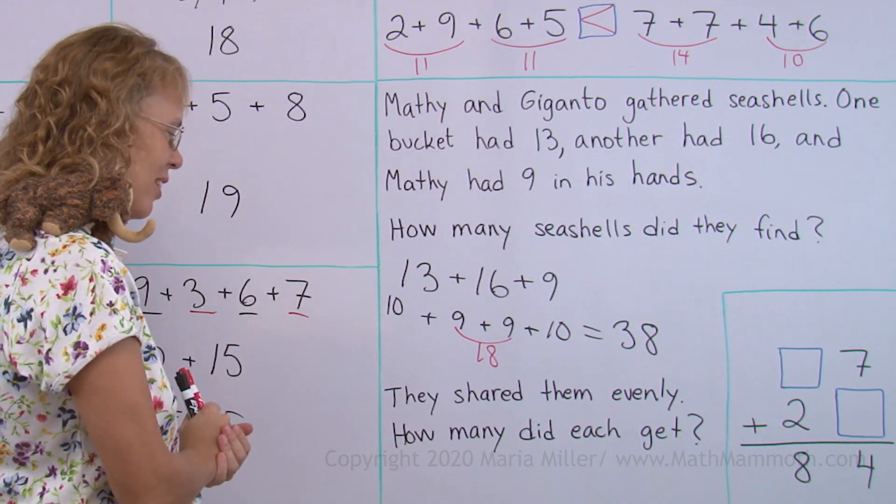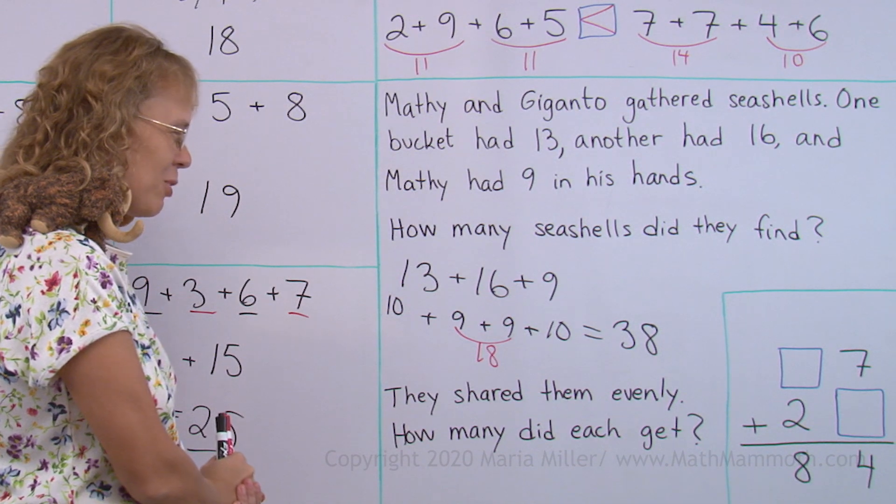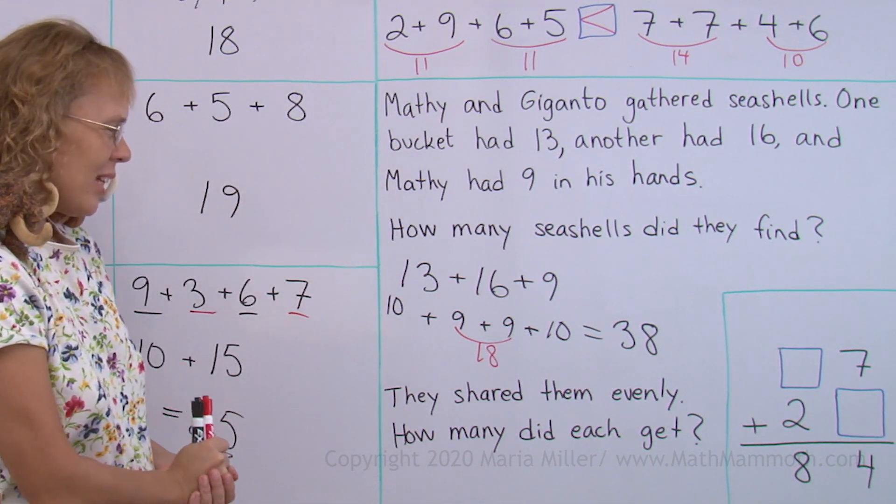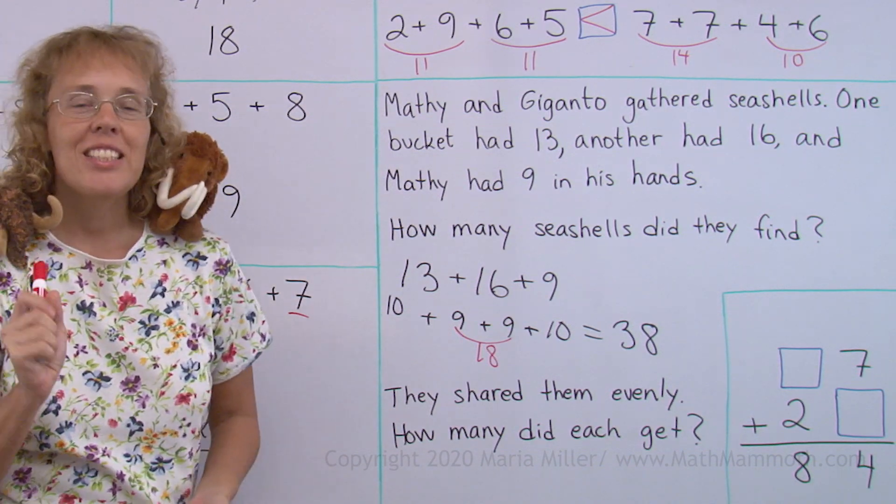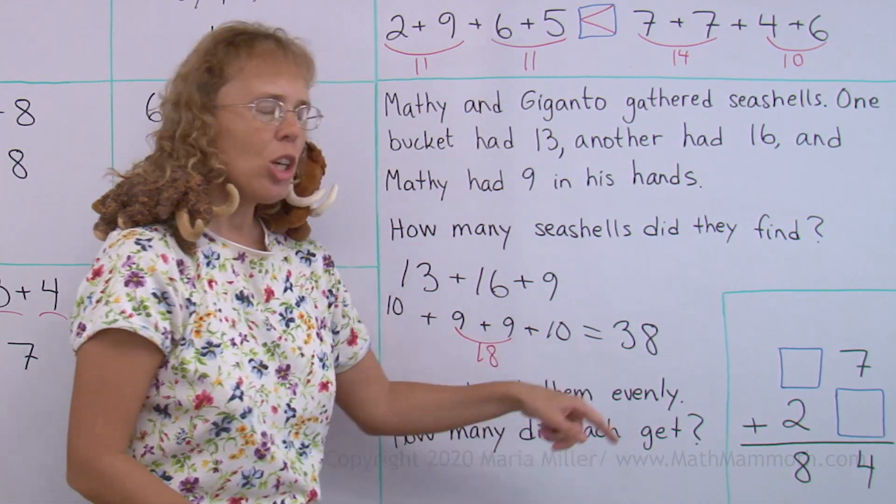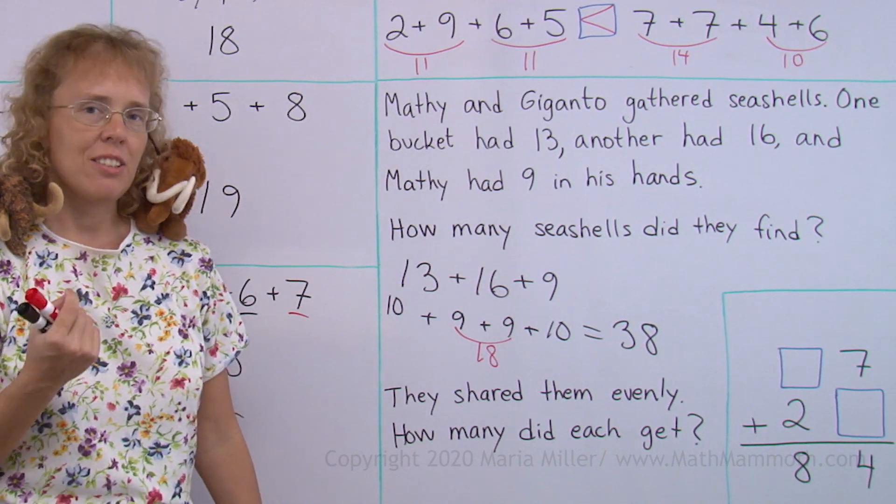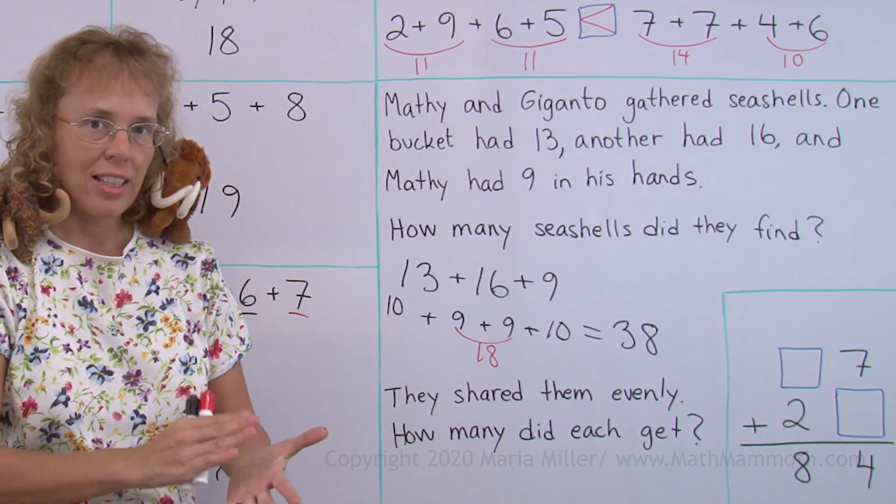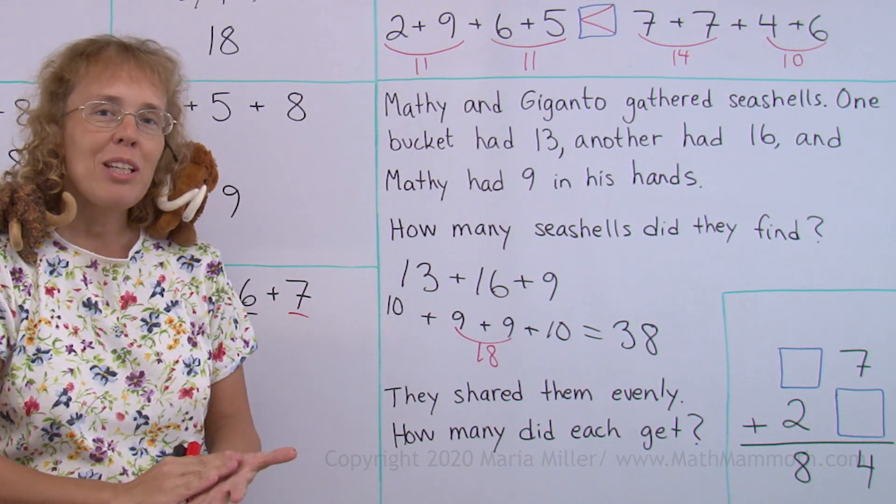Now, they shared them evenly. How many did each get? I think this is a little bit challenging problem. But let's see. I want to give you an easier problem first. 38 is pretty close to 40, isn't it? 40 is a very easy number to work with. Let's say they had 40 seashells and they shared them evenly. How many would each get?